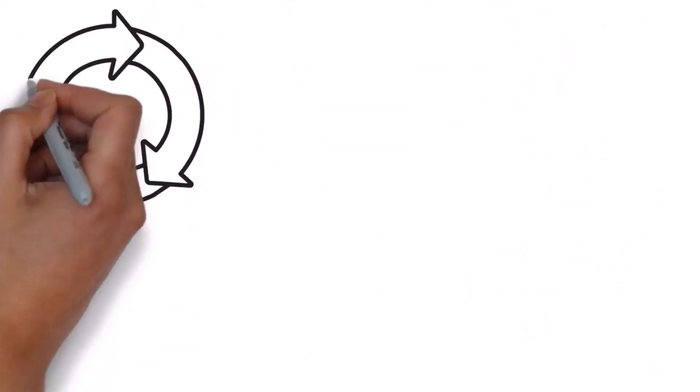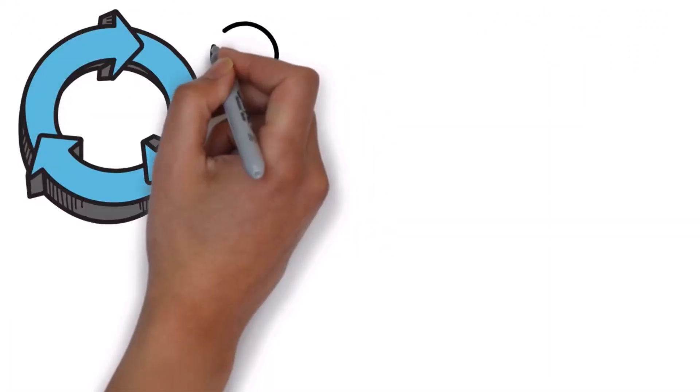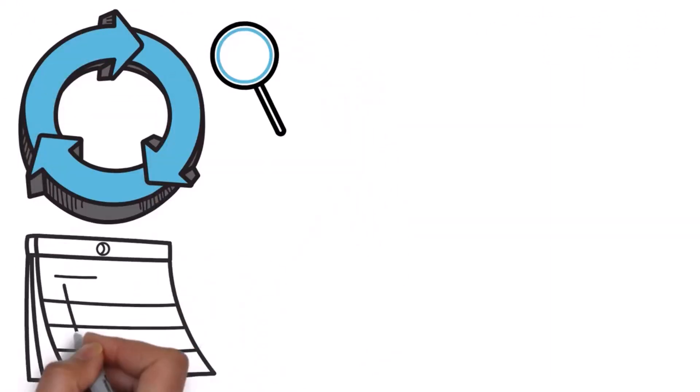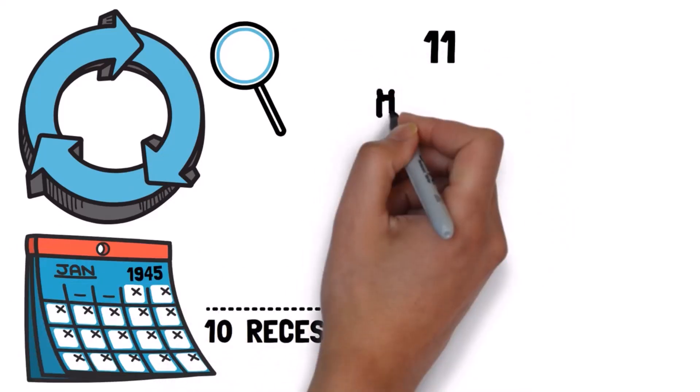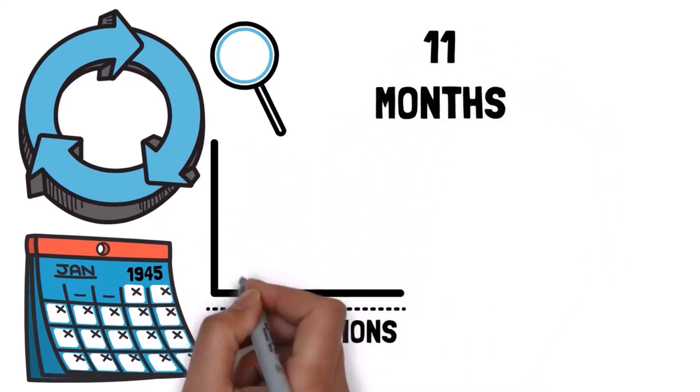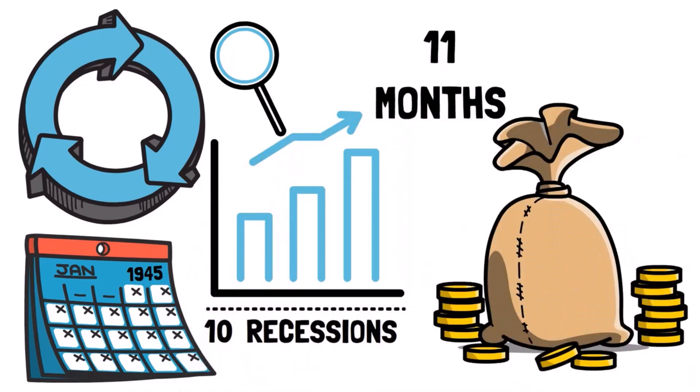It's important to minimize overall expenses to maximize profits. Recessions are a natural part of the economic cycle, occurring more frequently than people realize. Since 1945, there have been around 10 recessions, lasting an average of 11 months. While markets eventually recover, proper money management is crucial before investing during a recession.